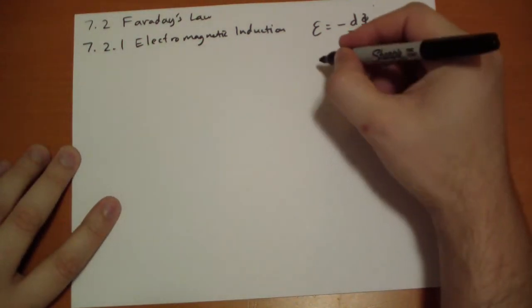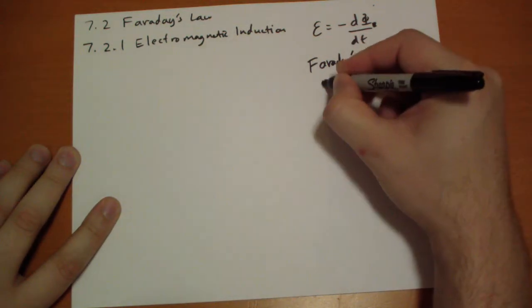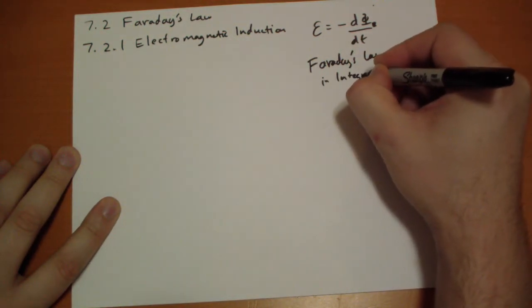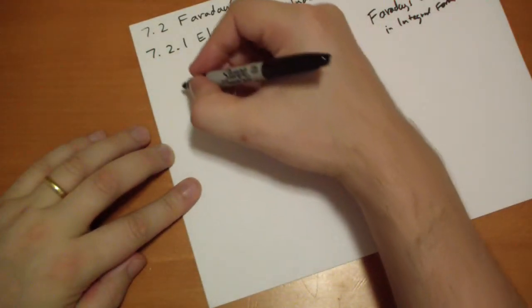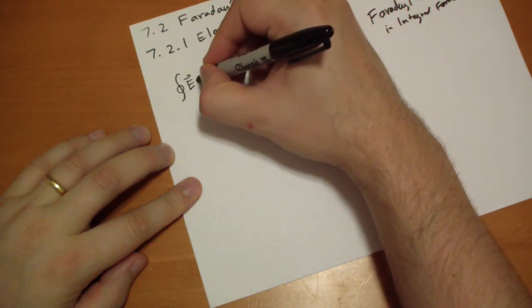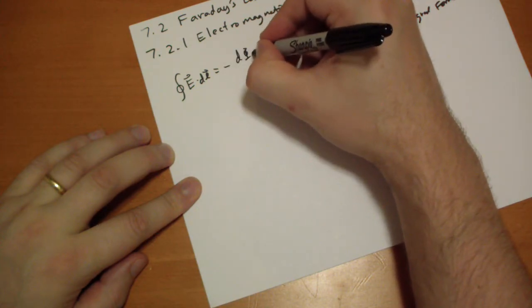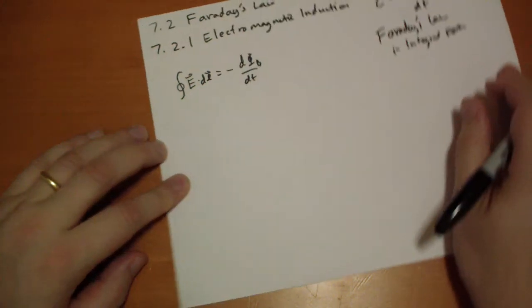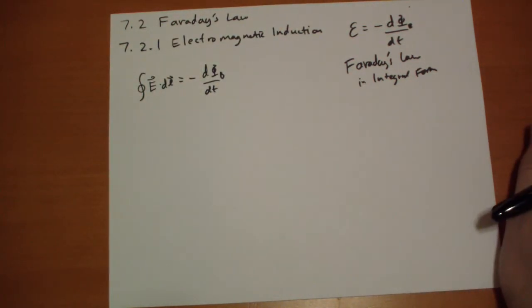This is actually Faraday's Law in integral form. The integral over some closed loop of the E vector dot DL vector equals negative the change in magnetic flux over time. These are the same equations - that's the electromotive force there.